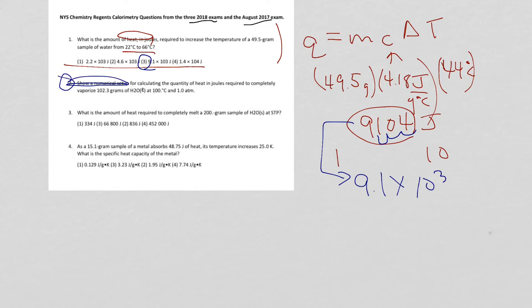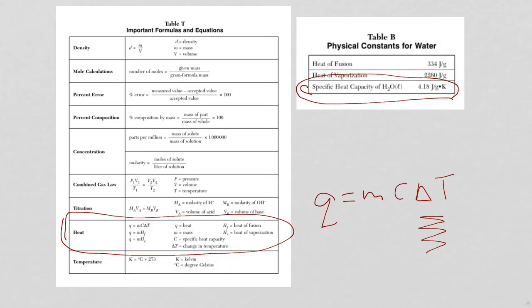Which means of course you're going to go ahead and plug into the equation. But remember we have three equations. We have to figure out what we're doing. So it says, show a numerical setup for calculating the quantity of heat in joules required to completely vaporize 102.3 grams of liquid water at 100 degrees Celsius and 1 atm.